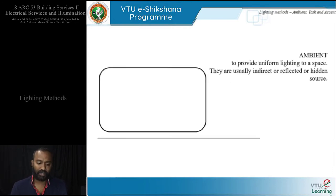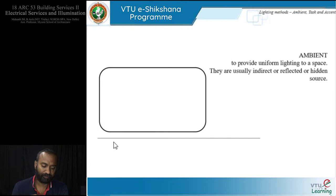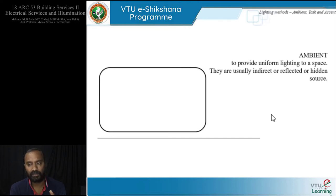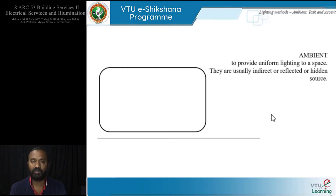So what are the lighting methods that exist? Imagine this to be a stage backdrop with a floor. If the entire ambience is lit uniformly — the entire wall lit without much fluctuation in lighting — that becomes ambient lighting. When we say the ambience is very well lit, we are not talking about a particular area being lit but about the entire area being lit without discomfort or glare.